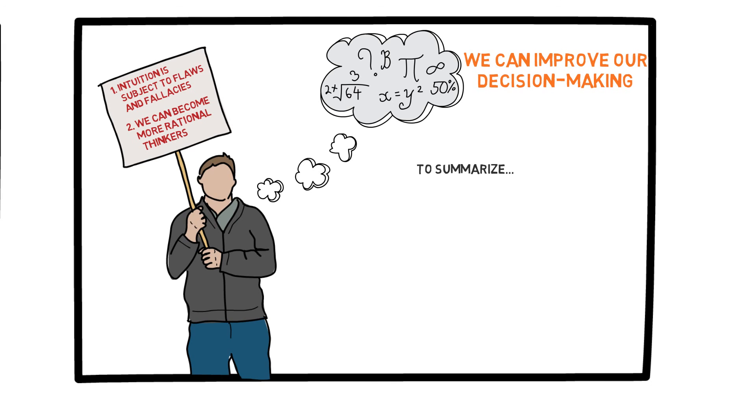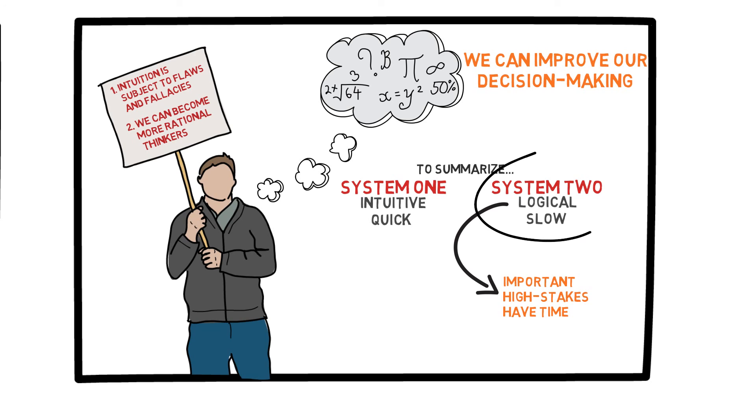To summarize, we all have two decision-making systems. System 1 is intuitive and quick, and System 2 is more logical and slow. Therefore, we can say as a general rule that if you are making an important high-stakes decision with significant consequences, and time is not an issue, it is much better to slow down and use System 2. Ensure that you are not just automatically making a decision based solely on intuition, but that you reason the situation out rationally and slowly. Thank you for watching.